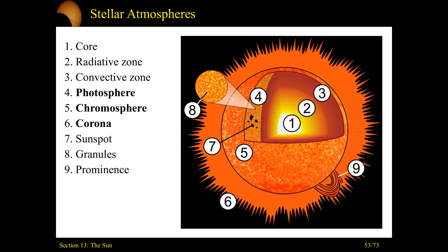Now we get into the stellar atmospheres, consisting of the photosphere — basically what we'd call the surface of the Sun — where we'll see things like granules and sunspots. Going above the photosphere will be the chromosphere, which has a large red tinge. And beyond that, we'll have the corona. The corona is very difficult to see because of just how bright the Sun is; you have to wait for eclipses. But a lot of the thermal energy — the hottest objects — are found in the corona. It's the second hottest region of the Sun.